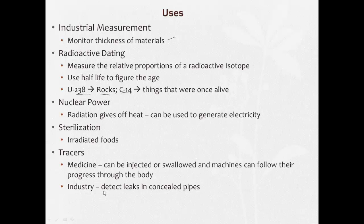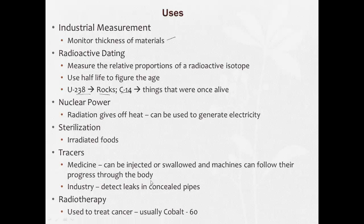You can inject something nuclear into pipes that are going to move underground and use equipment to detect its presence — that'll tell you where the pipe is leaking. So instead of chopping up an entire floor to get to a pipe, you just have to chop up a small portion of it. And it can be used in radiotherapy to treat cancer — a common one there is cobalt-60.